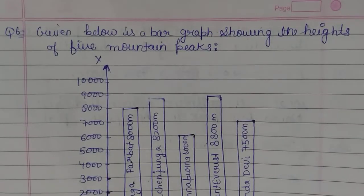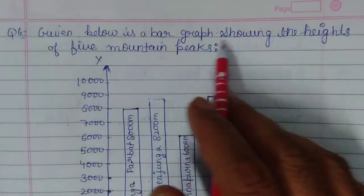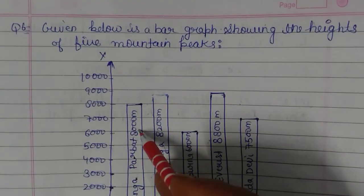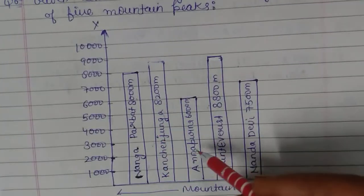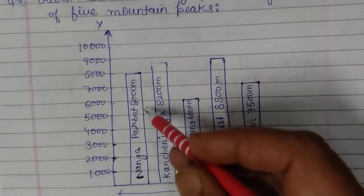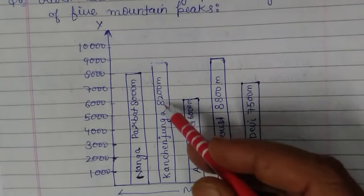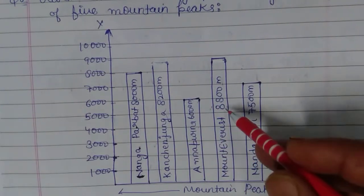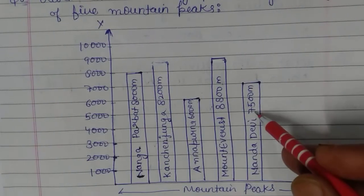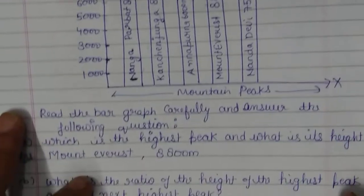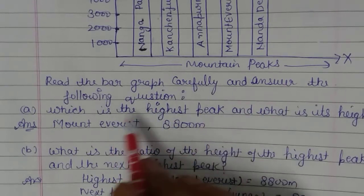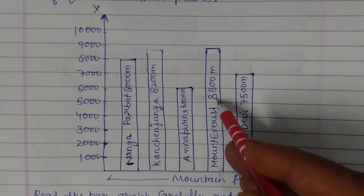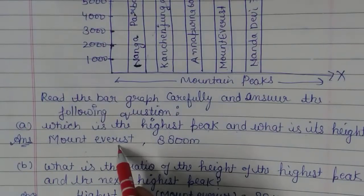This is the last question of this exercise. Given below is a bar graph showing the heights of five mountain peaks: Nanga Parbat is 8,000 metres, Kanchenjunga is 8,200 metres, Annapurna is 6,000 metres, Mount Everest is 8,800 metres, and Nanda Devi is 7,500 metres. Which is the highest peak and what is its height? The highest peak is Mount Everest at 8,800 metres.